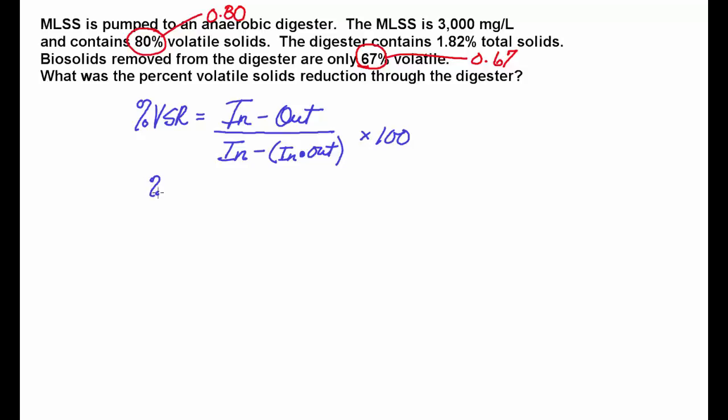If we put everything in here, we get percent volatile solids reduction is 0.8 minus 0.67 there on the top. And then you divide by 0.8 minus 0.8 times 0.67. That whole thing is going to be times 100.